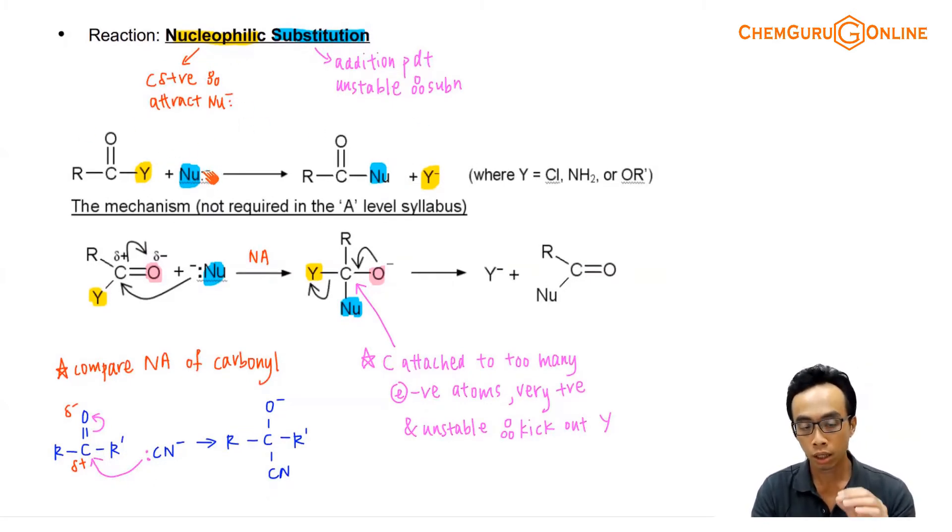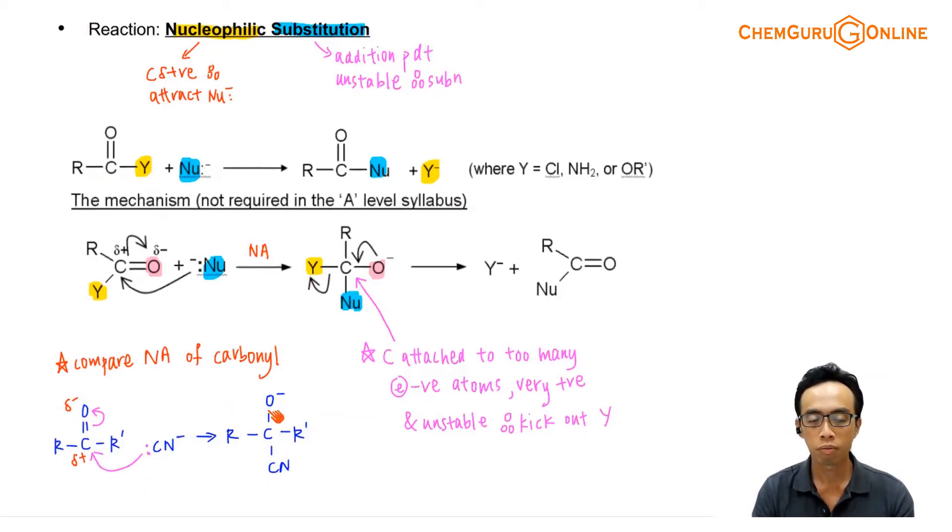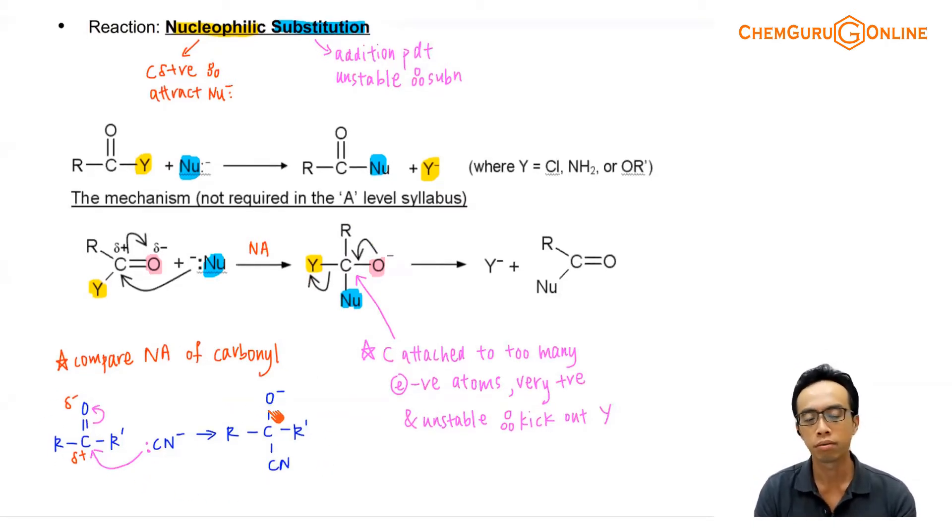And if I look at the mechanism, which again we have explicitly mentioned here, it is not required in syllabus, but we just want to appreciate that. What is interesting is you look at the first step involving this guy here, where the nucleophile attacks my acid carbon, pi bond opens up, both electrons go to oxygen, and we form this intermediate. Doesn't this look exactly the same as the nucleophilic addition of my carbonyl compound? It looks exactly the same.